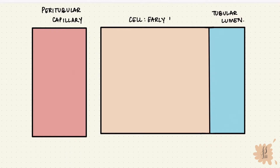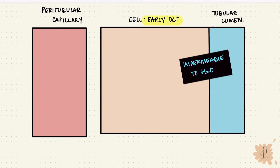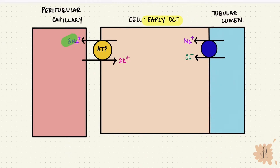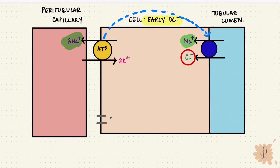The early DCT is impermeable to water and urea but is permeable to solutes. On the luminal membrane, there is a sodium chloride co-transporter which brings sodium and chloride from the lumen into the cell. The energy for this, like the other parts of the nephron, comes from a sodium-potassium ATPase on the basolateral membrane. That pushes sodium out of the cell, creating a gradient which pulls sodium from the other end into the cell, and that energy brings chloride along with it. Since chloride is coming against a concentration gradient, it then diffuses along its gradient out of the cell. Five to ten percent of sodium is reabsorbed here.